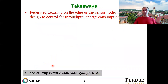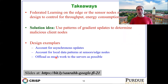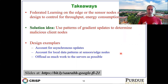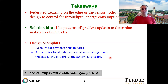The takeaways from this line of work: federated learning at sensor nodes and edge nodes is a growing phenomenon that will become more important over time. You have to design for throughput, energy consumption, and security simultaneously. New kinds of security threat models come into play when doing learning on the edge. The solution idea we are exploring is using patterns of gradient updates to identify malicious nodes — accounting for asynchronous updates, local data patterns based on spatial placement, detecting and identifying malicious nodes, and offloading work to servers while fine-tuning only the final few layers at the client.